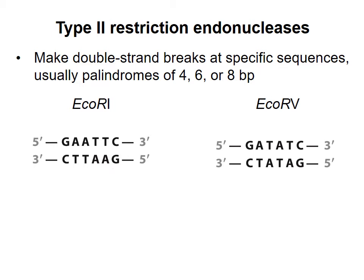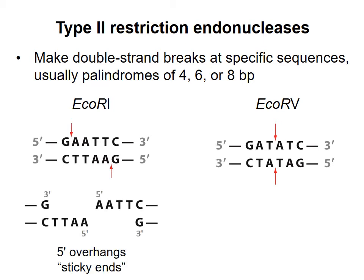Restriction endonucleases are named after the organism that produces them and the order they were discovered. So both of these enzymes were isolated from E. coli strain RY13, and they were the first and the fifth enzymes discovered in this organism. The red arrows indicate the points where the enzymes cut each DNA backbone. After both strands of DNA are cut by EcoRI, the ends of the DNA will look like this.